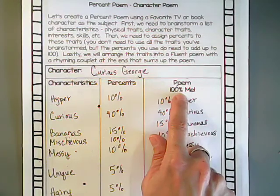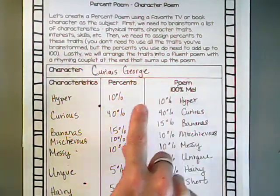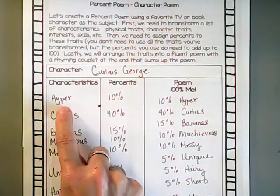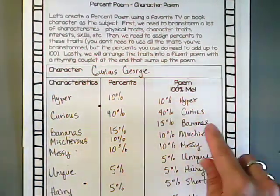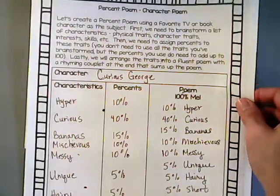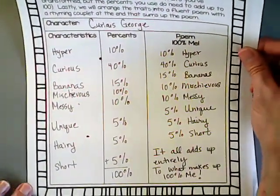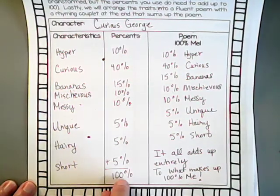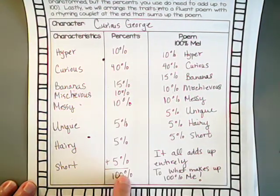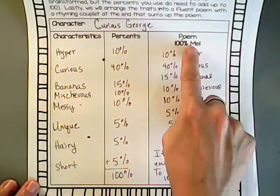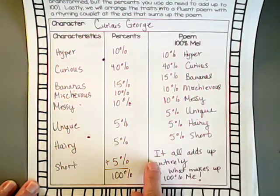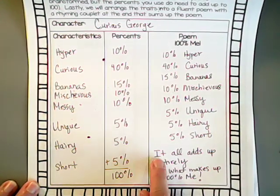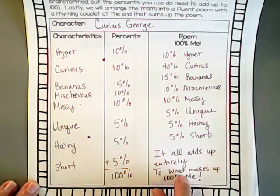When I rewrote it into the poem area, I just put the percent in front of the characteristic — for example, '10% hyper' — and rewrote it all out. I also made sure, sometimes doing it on paper helps, that everything added up to 100%. I added it up one more time just to make sure, then I rewrote the poem. You also need to add two lines at the end that say something about a hundred percent me and make it rhyme.